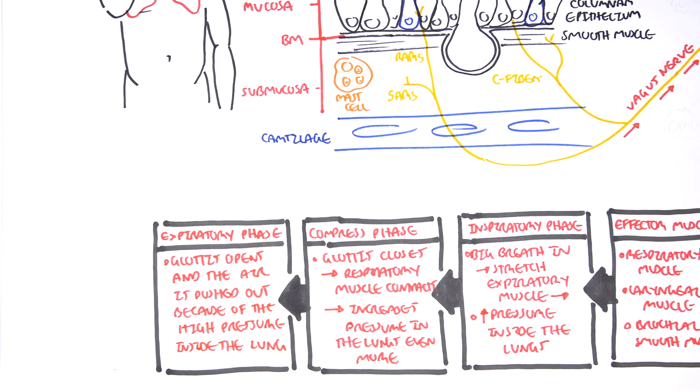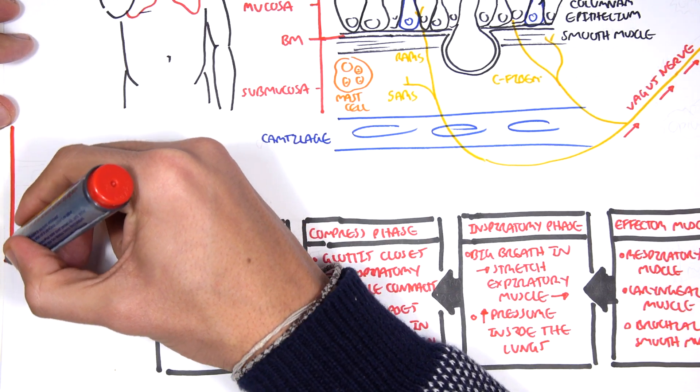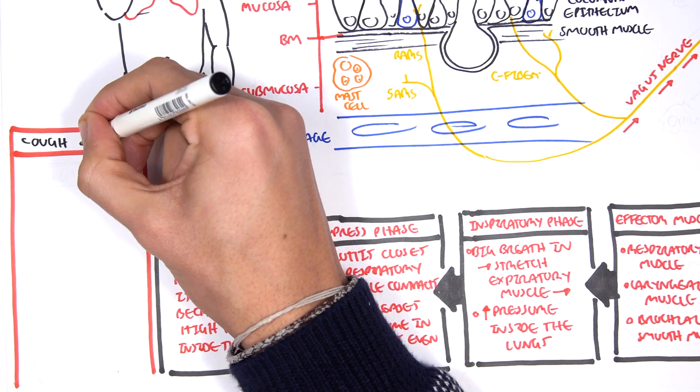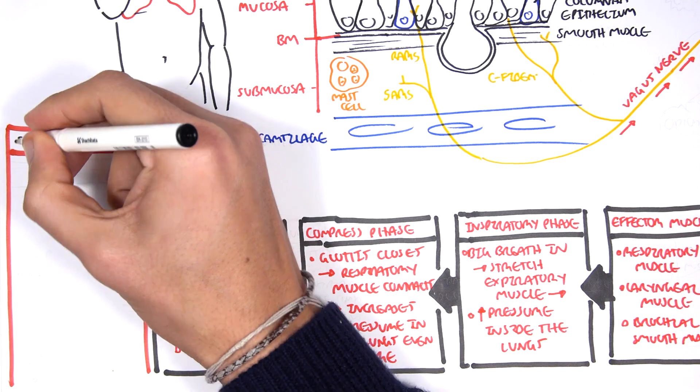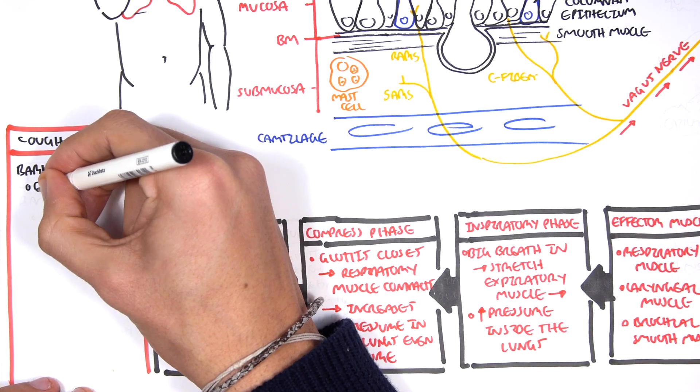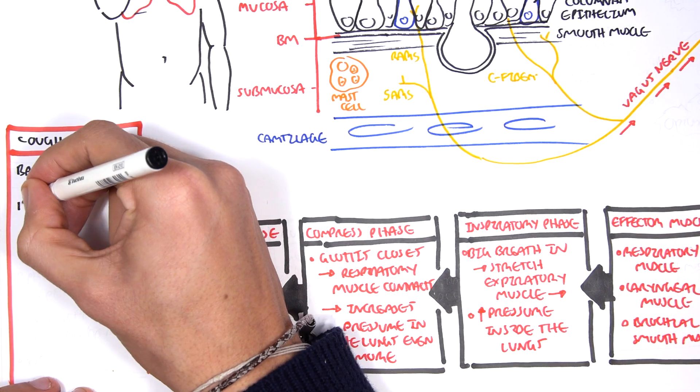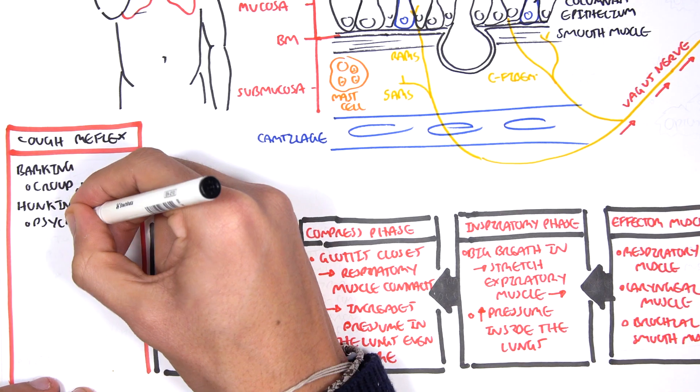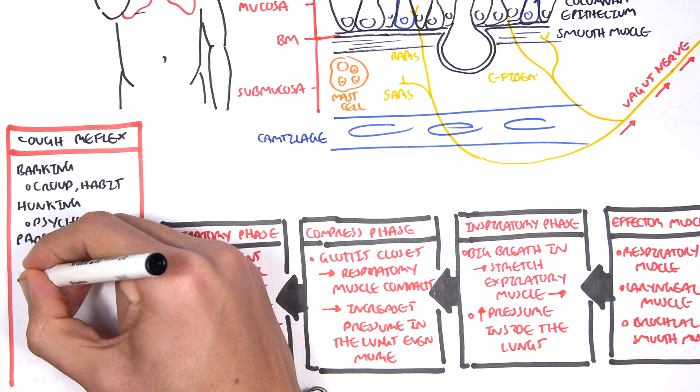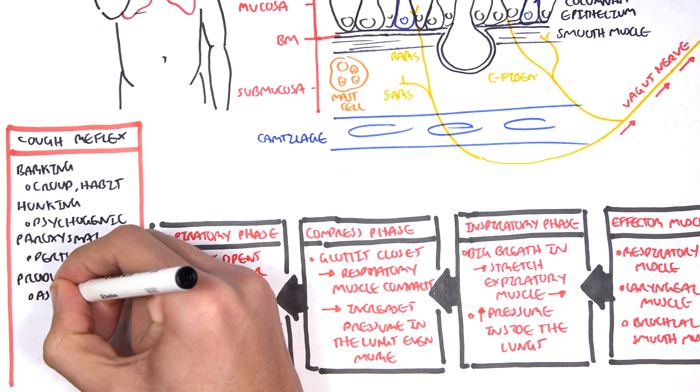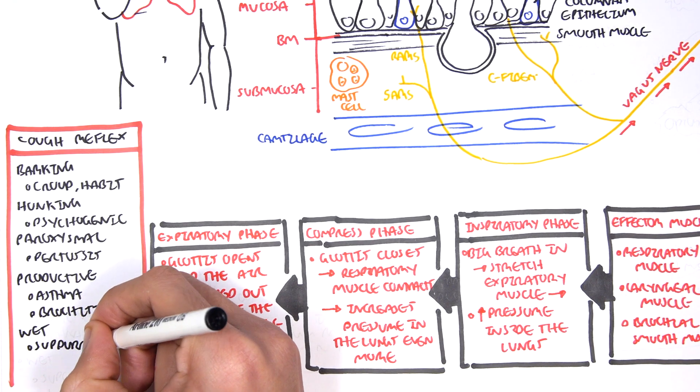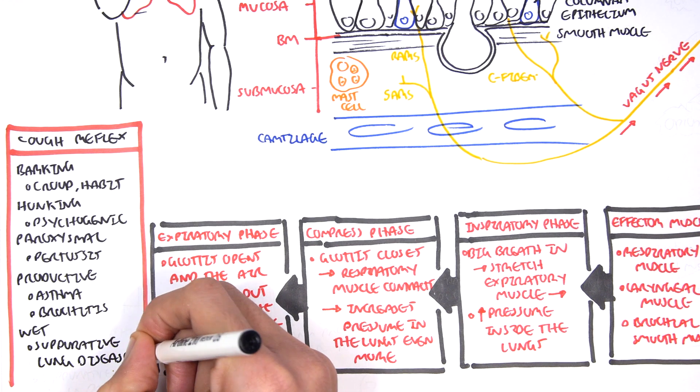Now let us look at the different types of cough. The different types of cough can mean different conditions. We can have barking cough, which can be croup or a habit cough. There can be honking cough, which is most likely psychogenic. Paroxysmal cough can mean pertussis. Productive cough is associated with asthma and bronchitis. A wet cough is associated with suppurative lung disease.